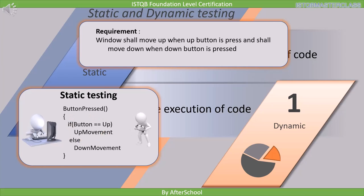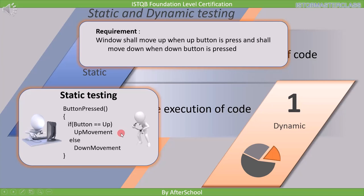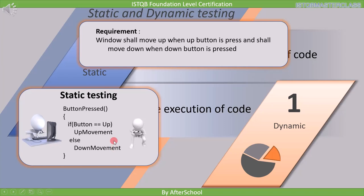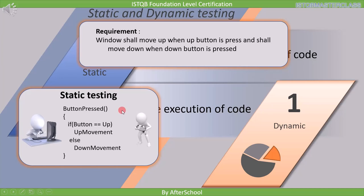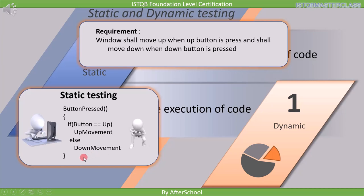Let's try to test this particular code. It says if the up button is pressed, then move up, but if the up button is not pressed, then move down. If you execute this code, the window will never stop moving — it will move up if you press the up button, but the moment you release it, it will keep moving down. This means the code is failing to fulfill the requirement. This is how we find defects through static testing. We call it static because when performing this test, the code was not moving — it was in one place.